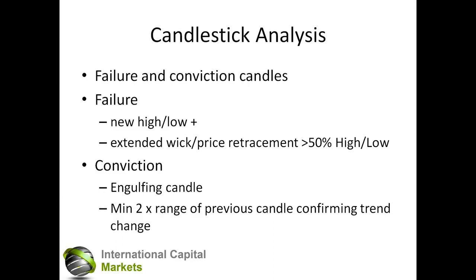The opposite is the conviction candle — anything that has a full body with very little wick at the other end. Generally, a conviction candle will either engulf an existing candle, or the range on the body will be between one and a half to three or more times the size of the existing candle and encompasses many of the previous candles. This basically tells us a trend change is imminent, especially on the higher timeframe. Conviction candles, especially to pick a breakout, are extremely effective.